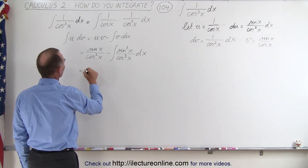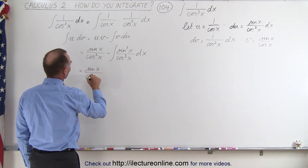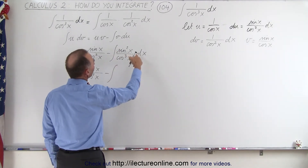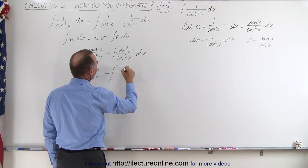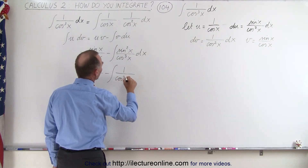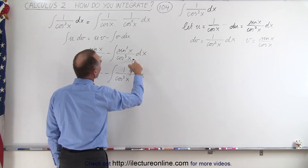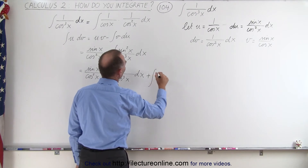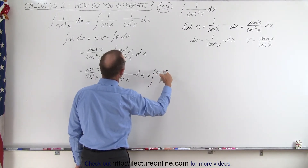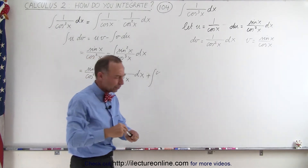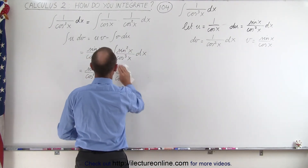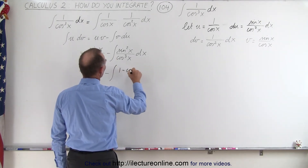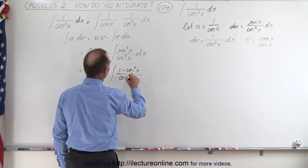This becomes equal to the sine of x divided by the cosine square of x minus the integral of 1 minus the cosine square of x over the cosine cube of x dx. The minus times a minus gives us a plus the integral of cosine square of x divided by cosine cube. That's the integral of 1 minus the cosine square of x over the cosine cube of x dx.